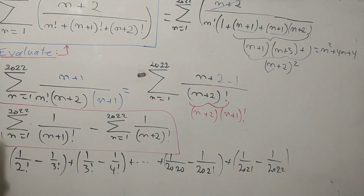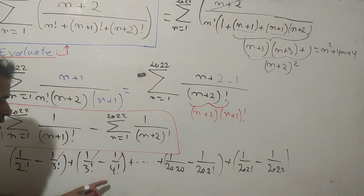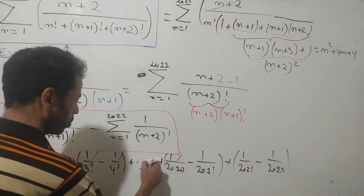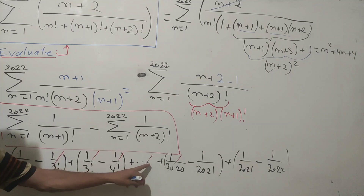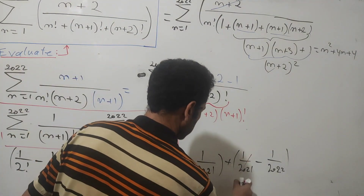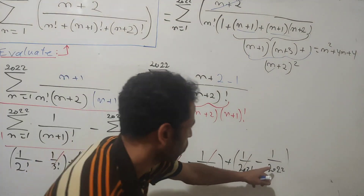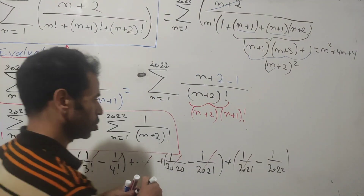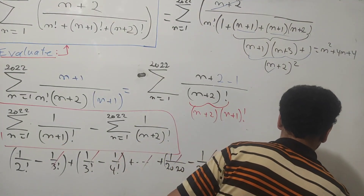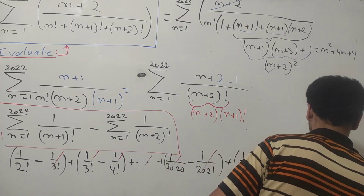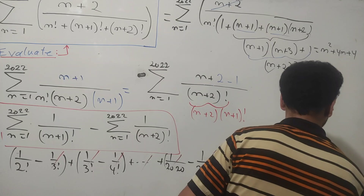Most of the terms cancel out through telescoping. Each intermediate term cancels with the adjacent one, so we are left with just 1 over 2 factorial minus 1 over 2022 factorial.